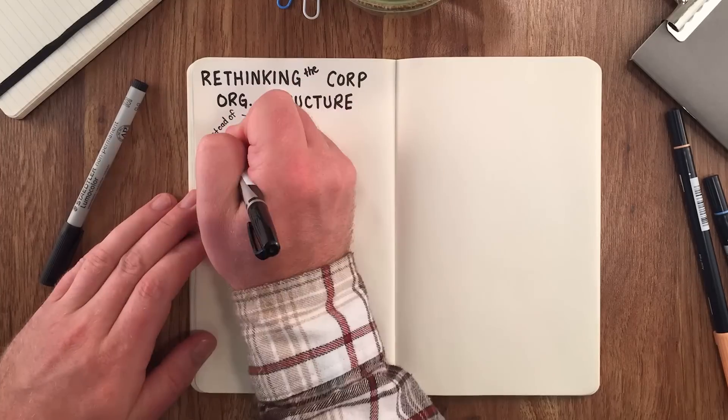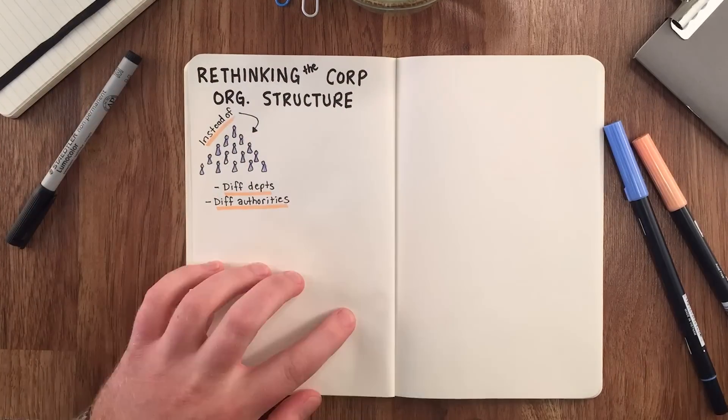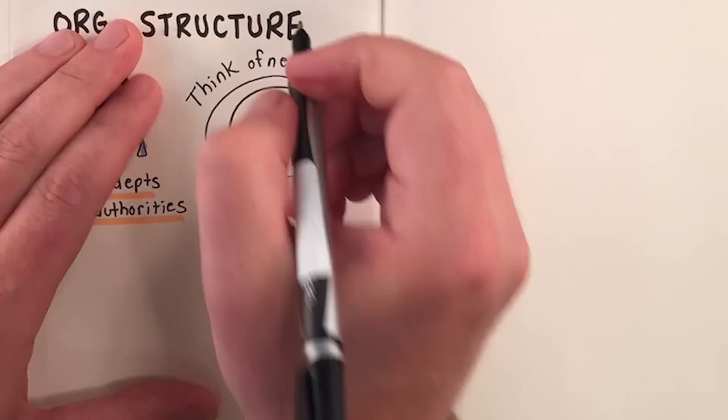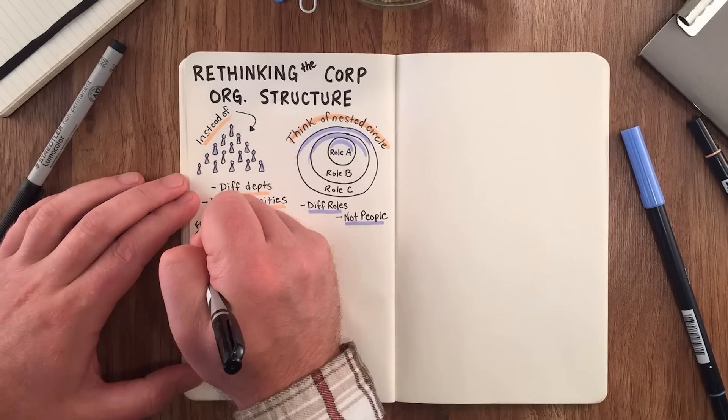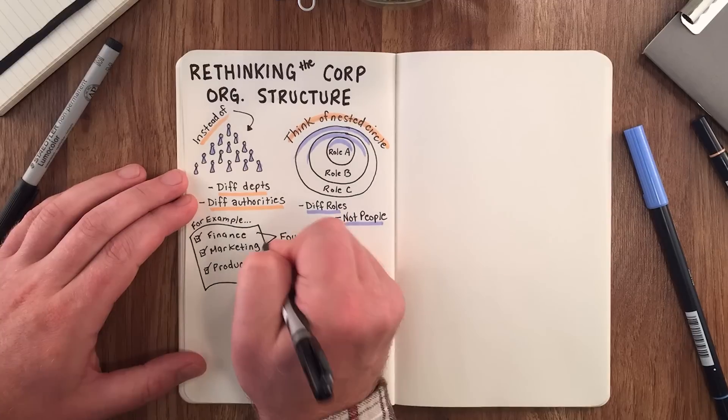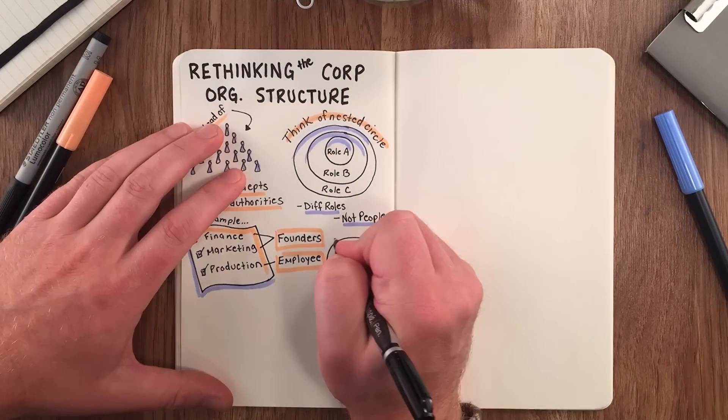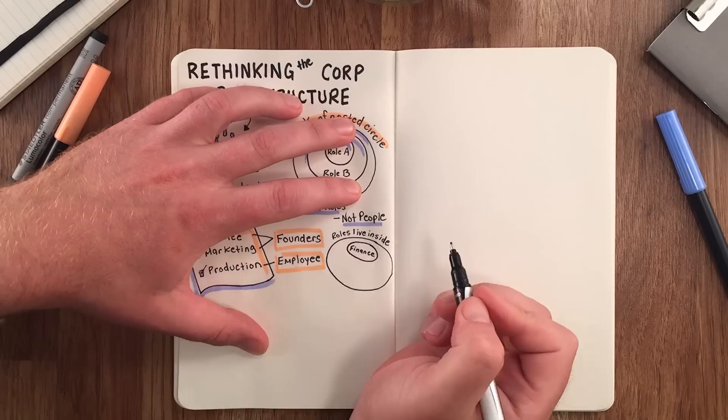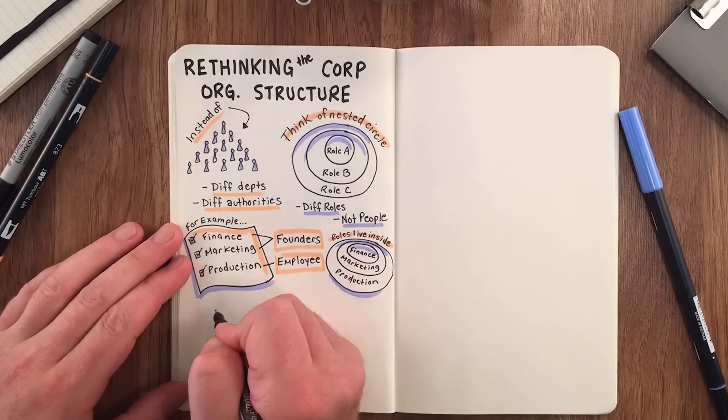Instead of thinking of a company as a pyramid of people in different departments and with different authorities, think of it as a set of nested circles that consist of different roles, not people. For example, a company may have a production, a marketing, and a finance role. And a person can fill more than one role. The founder may fill the marketing and finance roles in a startup, while an employee fills the production role. All these roles live within a circle, which is simply a group of roles.